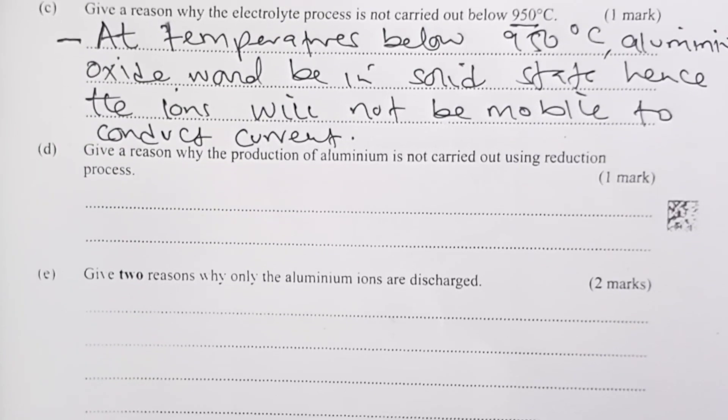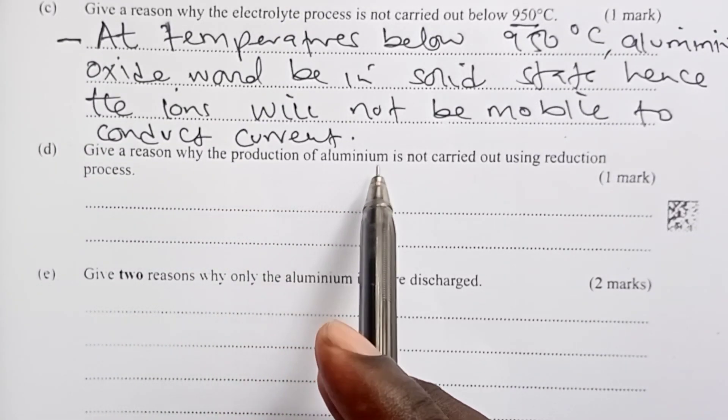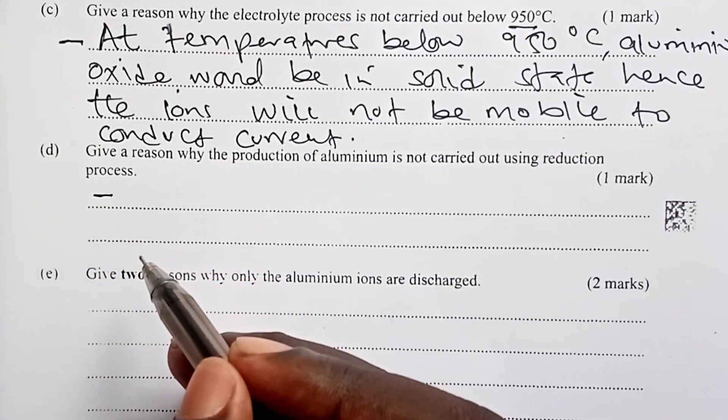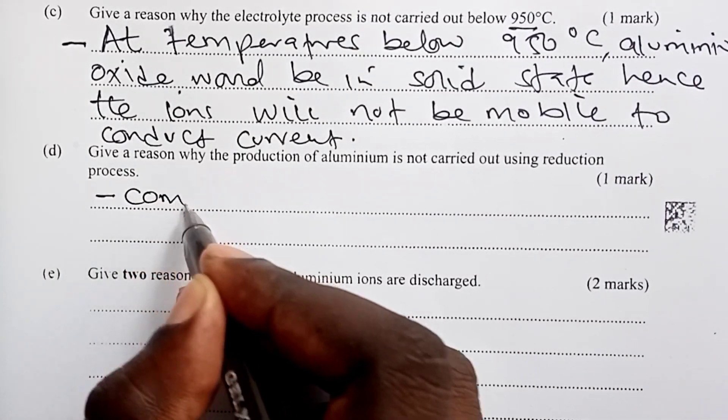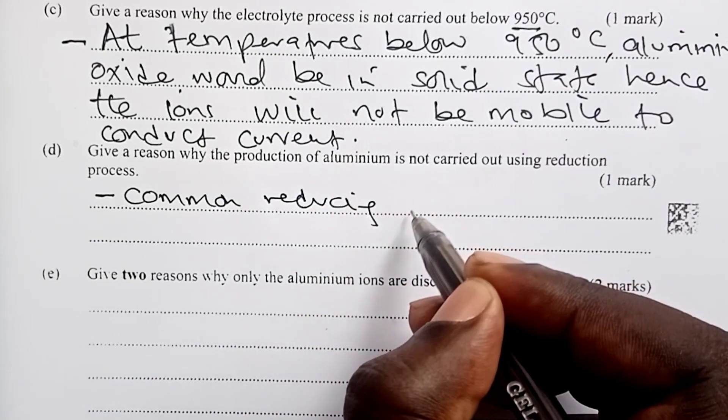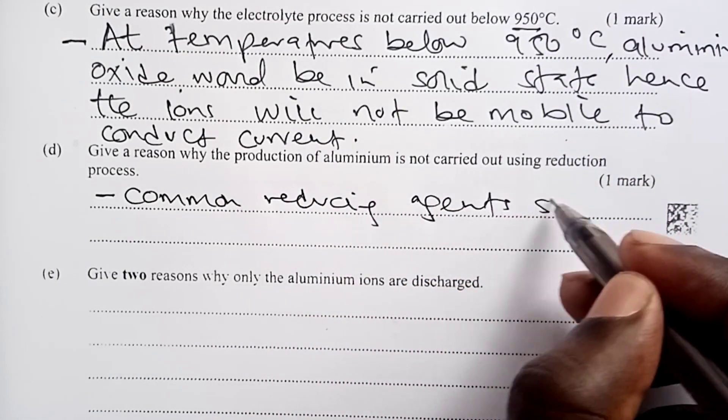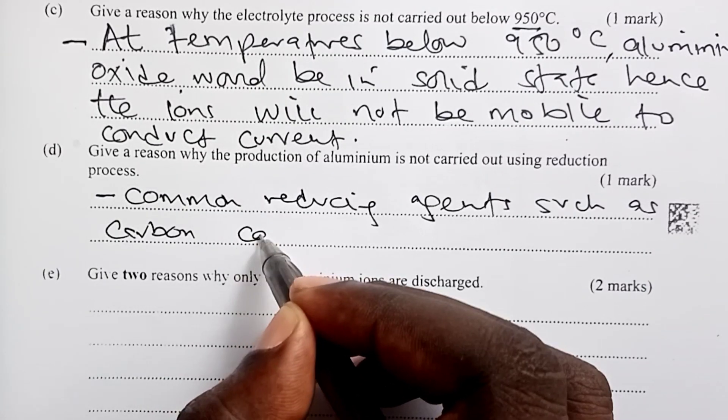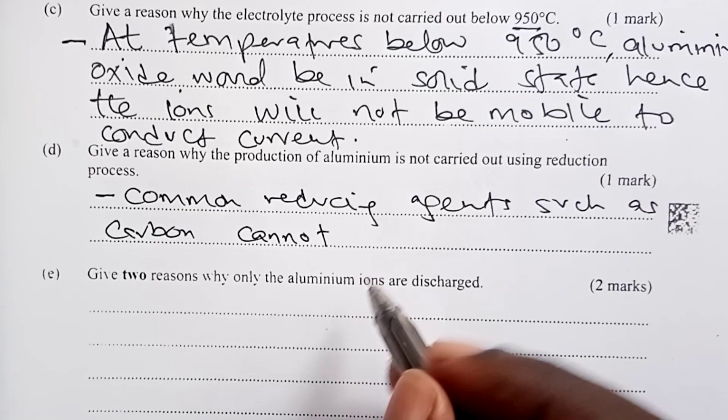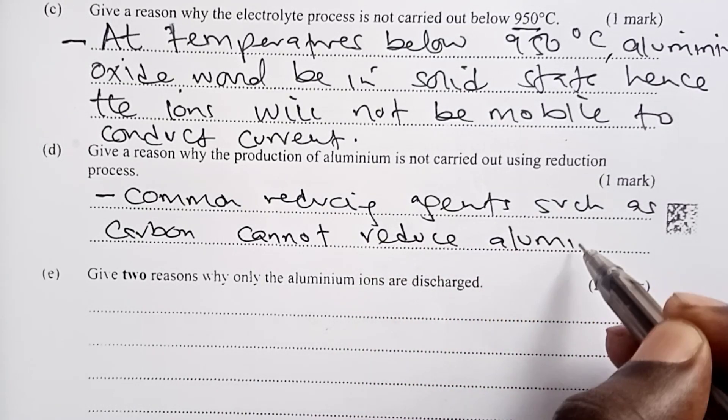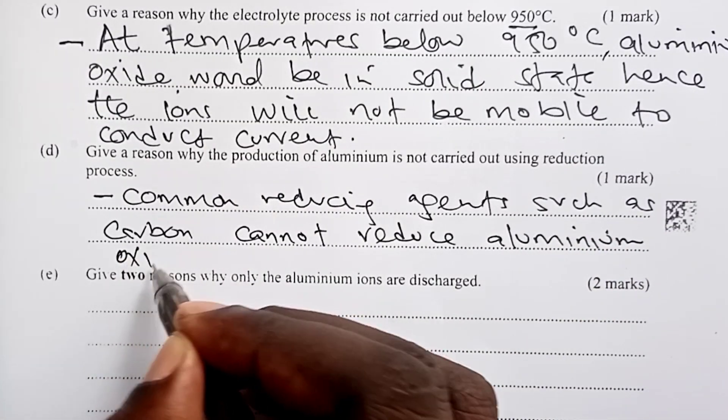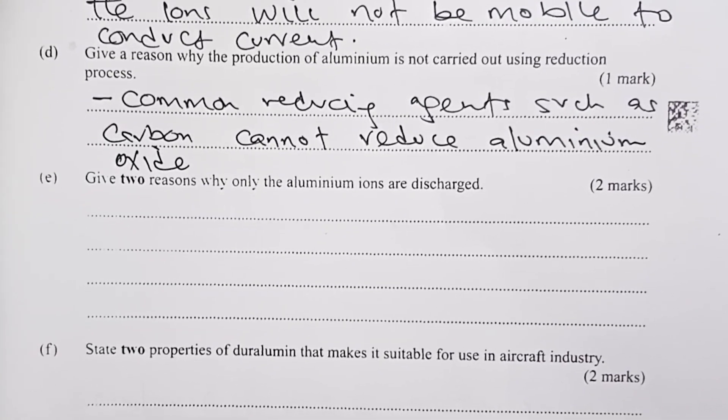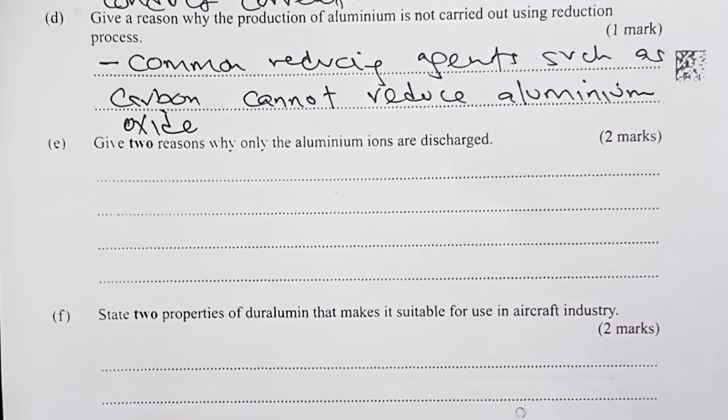To the next question, give a reason why the production of aluminum is not carried out using reduction process. And here, the answer is as easy as common reducing agents. Common reducing agents, and here, we do use mainly carbon. Carbon, as we know, is below aluminum in the reactivity series, so it cannot reduce aluminum oxide. That was the expected answer for the question that asks the reason as to why we obtain aluminum via electrolytic means and not by reduction.